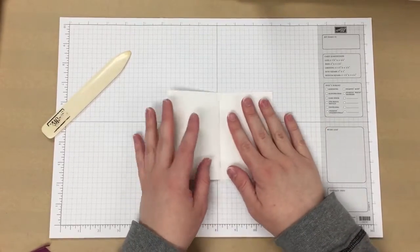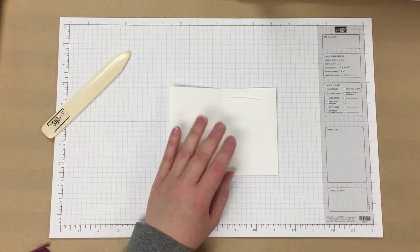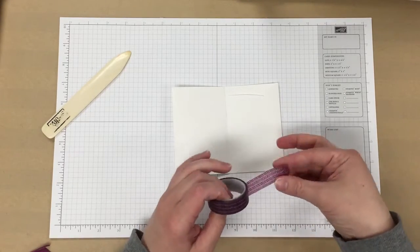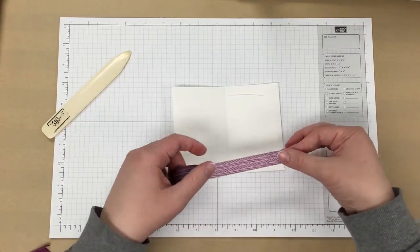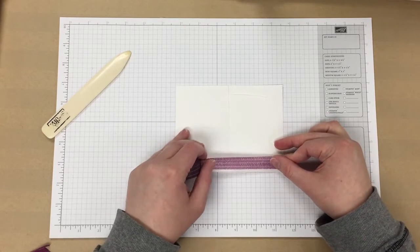Once you've done that, we're going to add some washi tape to the inside. I'm using the Happy Haunting washi tape, and this is the rich razzleberry design out of that three-pack. I'm just going to put a little bit just across the bottom.